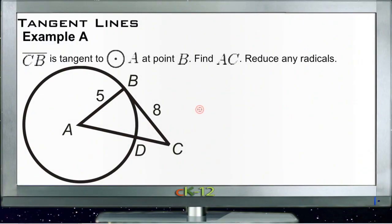Example A for tangent lines says that line CB, actually technically line segment CB—I was starting with the wrong tool there, and the wrong color. There we go. Line segment CB in orange is tangent to circle A at point B. We need to find AC and reduce any radicals that we may run across as we're trying to calculate it.